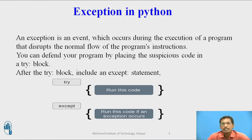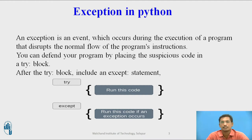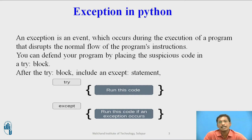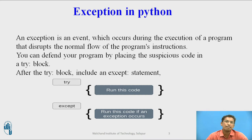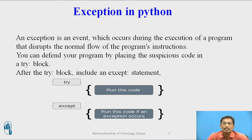If an exception occurs, control will jump to the except block and the statements inside the except block will be executed. If exception does not occur in the try block, then the except block will not be executed. This is how you handle exceptions in Python.